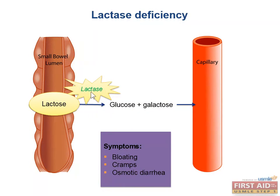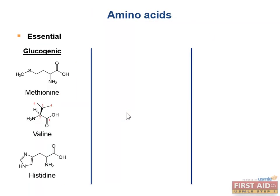The lactase enzyme breaks down the disaccharide lactose into its constituents, which can then get absorbed. Now let's talk about the amino acids. So far we've covered the metabolism of nucleic acids and carbohydrates, but now we'll move into proteins and their building blocks, which are the amino acids.